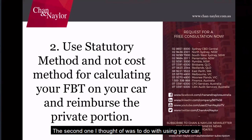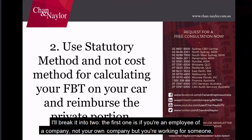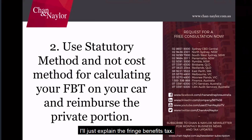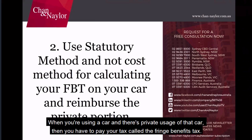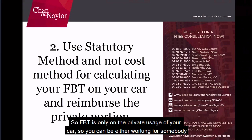The second tip is using your car. Everybody uses their car and there are different ways to claim it as a tax deduction. If you're an employee given a company car, the common method now for fringe benefits tax is the statutory method. When you use a car and there is private usage, you pay a tax called fringe benefits tax. If you're using it purely for business purposes, there's no fringe benefits tax — FBT only applies to private usage.